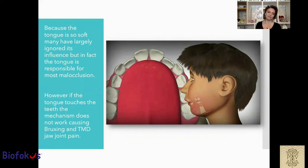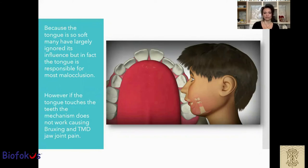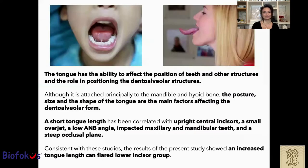However, if the tongue touches the teeth, the mechanism does not work, causing bruxism and TMD and, of course, jaw joint pain. The tongue has the ability to affect the position of teeth and other structures and plays a role in positioning the dental alveolar structure.